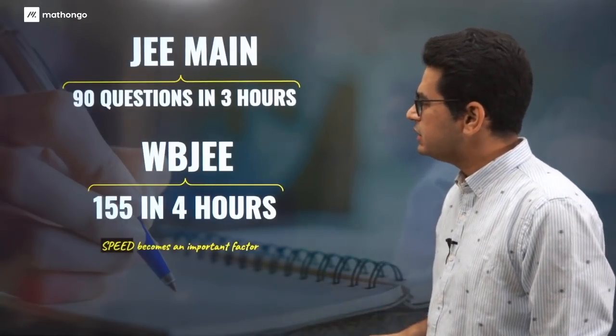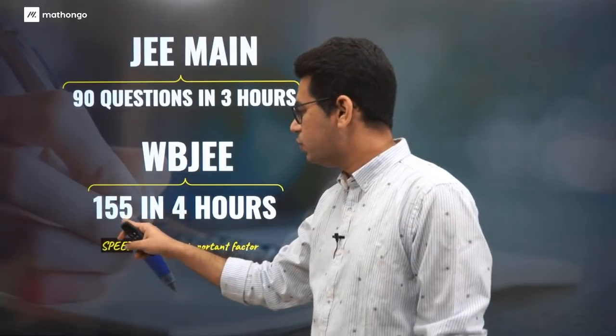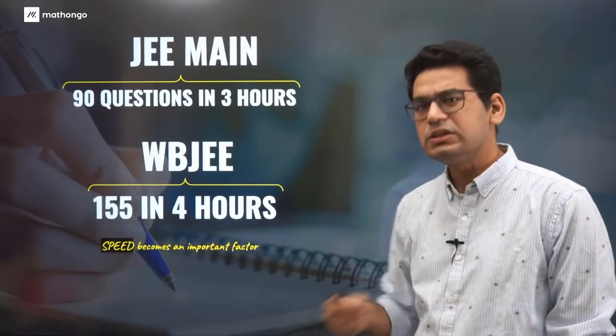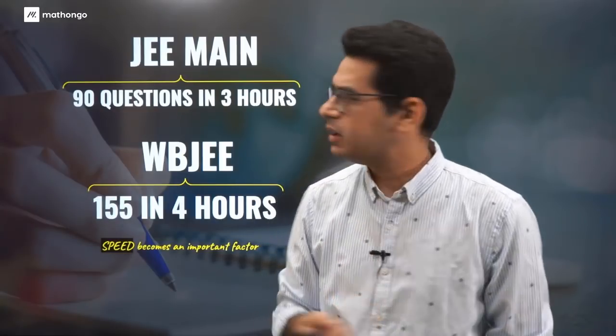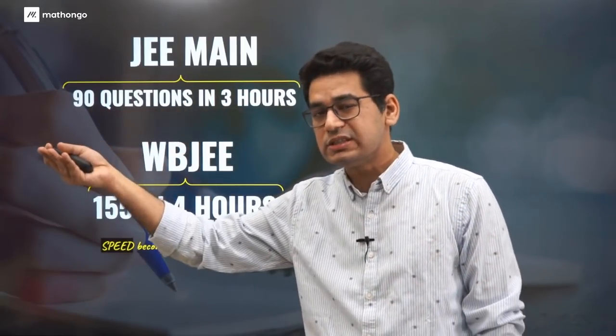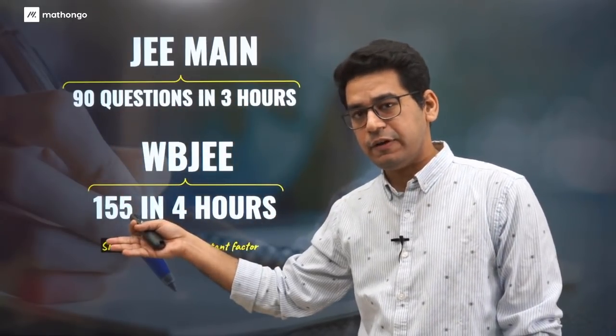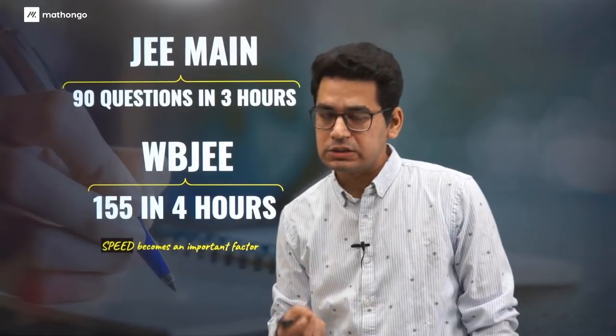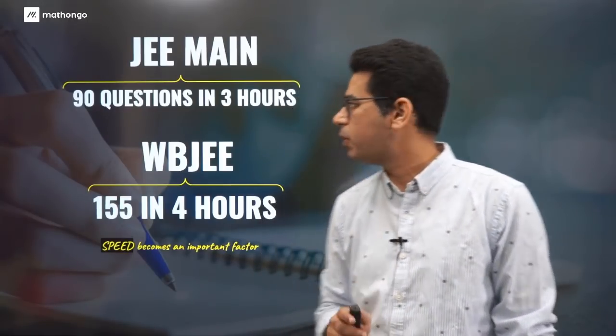So if you are well prepared, the angle of asking questions is a bit different, that is what you have to prepare for. Another difference between JEE Main and this: JEE Main asks you 90 questions in 3 hours out of which you have to select 75 questions. Here you have to do 155 in 4 hours. So speed also becomes an important factor because you have to do double in 4 hours. Speed along with accuracy becomes an important factor.